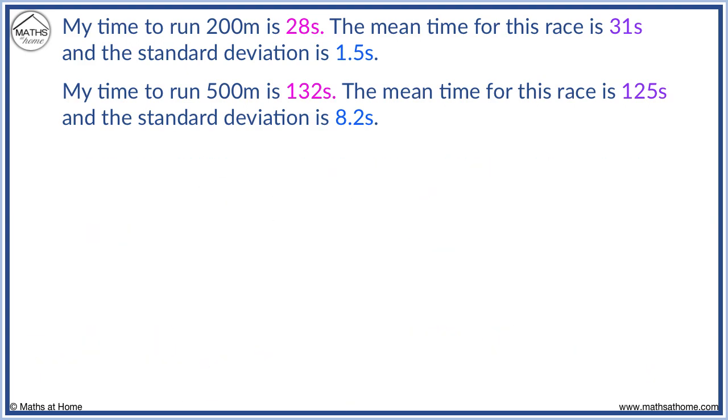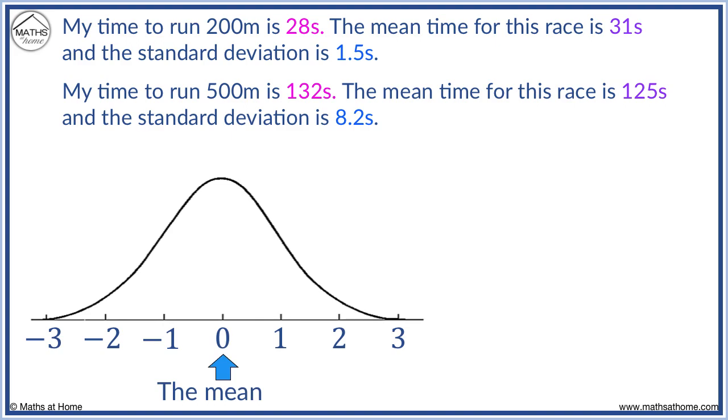On the z-score distribution curve, the z-score for 200 metres of minus 2 is here, and the z-score for 500 metres of 0.854 is here.